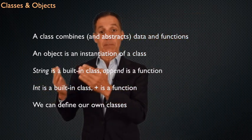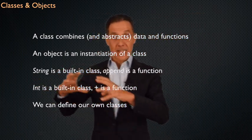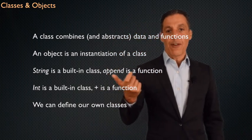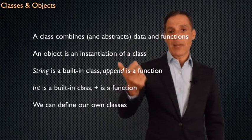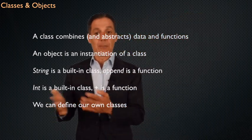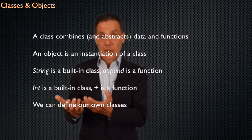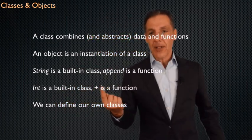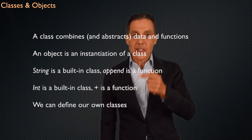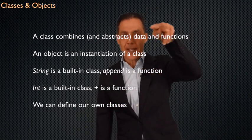So here's a really simple example of a class. A string is a built-in class. The data is the string itself, quote unquote aardvark. The functionality is append. I can append something to the end of a string. An integer is a built-in class. Stores data, the actual number. And the addition operator is a function on that data. So now you see what I mean when I say data and functionality.